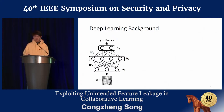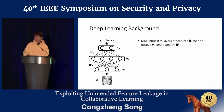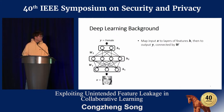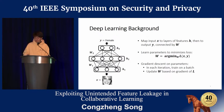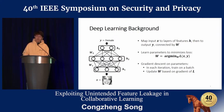I'll briefly introduce some background in deep learning. A deep learning model maps input data x to layers of features h, then to output y. The input, features, and output are connected by weight parameters w. For example, the input could be a face image and the output could be a female class for a gender classification task. The goal of learning is to find the optimal parameters that minimize some loss function. This minimization is done using gradient descent: in each iteration, we take a batch of training data, compute the loss and gradients, and update the model parameters in the negative direction of the gradients.